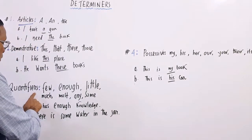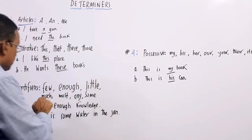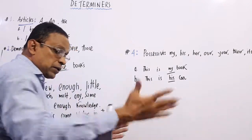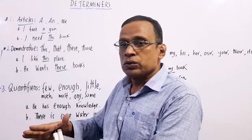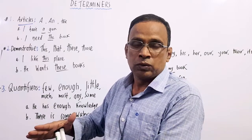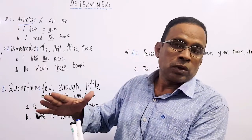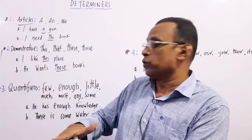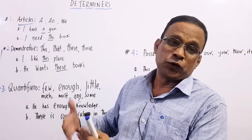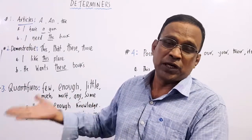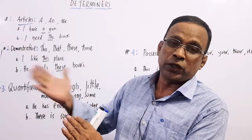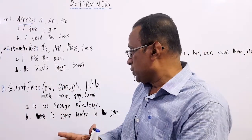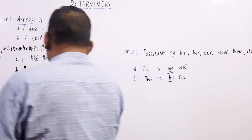Number three: quantifiers. Few, enough, little, much, most, any, some - there are some more. We use them to tell about the amount of a noun, about the quantity of a noun. Let's say I have much knowledge, I have sufficient experience. Usually after them we use uncountable nouns.